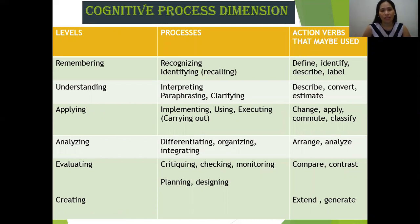This table of Bloom's revised taxonomy shows the levels, processes, and action verbs that may be used. For example, at the remembering level, the processes include recognizing or identifying and recalling, with action verbs such as define, identify, describe, or label.